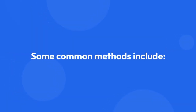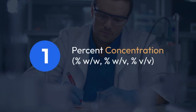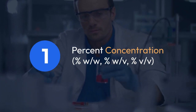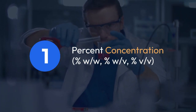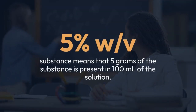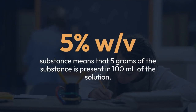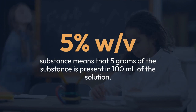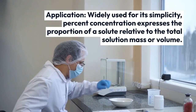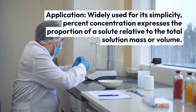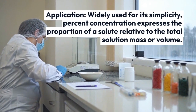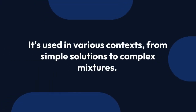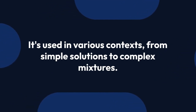Some common methods include % concentration: %w/w, %w/v, and %v/v. For example, 5% w/v means that 5g of the substance is present in 100ml of the solution. % concentration expresses the proportion of a solute relative to the total solution mass or volume, and it is widely used from simple solutions to complex mixtures.